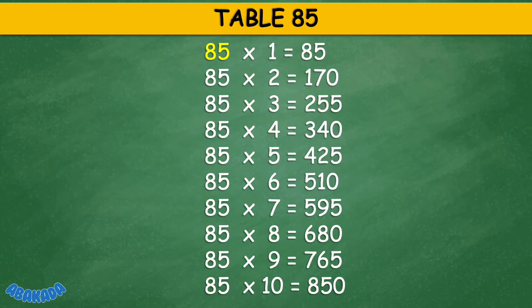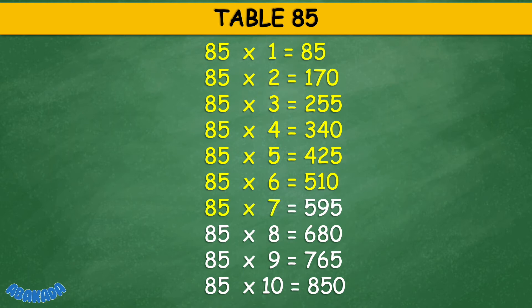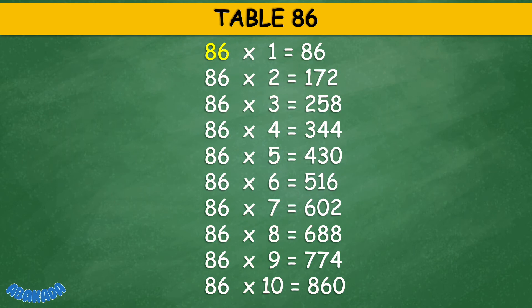Table 85: 85 times 1 equals 85, 85 times 2 equals 170, 85 times 3 equals 255, 85 times 4 equals 340, 85 times 5 equals 425, 85 times 6 equals 510, 85 times 7 equals 595, 85 times 8 equals 680, 85 times 9 equals 765, 85 times 10 equals 850.